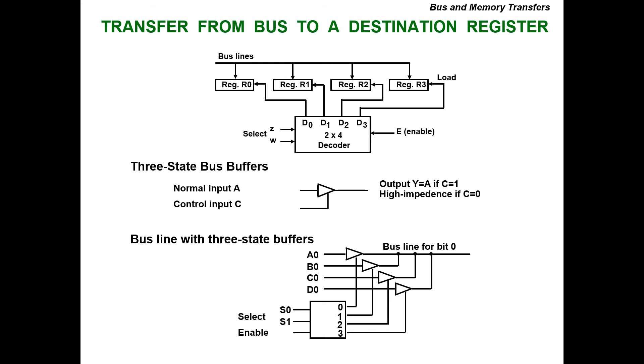In the bus line with three-state bus buffers, we have selection inputs S0, S1 and enable. If selection inputs are 0-0, A naught is selected; 0-1, B naught is selected; 1-0, C naught is selected; and 1-1, D naught is selected. This is the bus line for bit zero. This is all about three-state bus buffers.